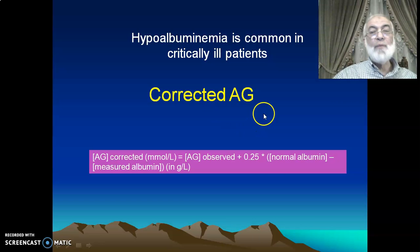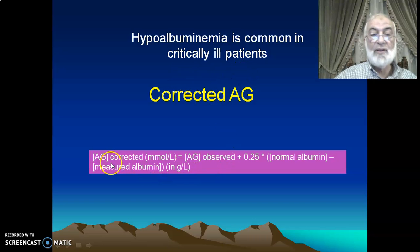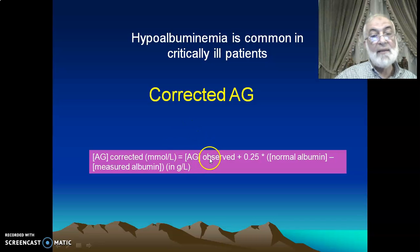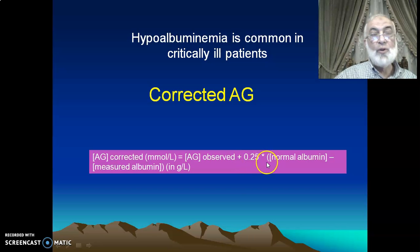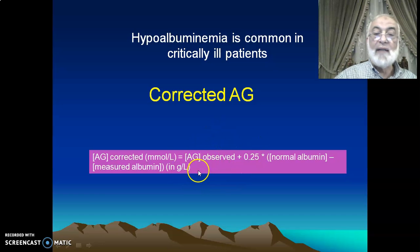Another important concept is corrected anion gap. Most patients in critical illness are usually suffering from hypoalbuminemia. The formula for corrected anion gap is: observed calculated anion gap plus 0.25 multiplied by (normal standard albumin minus the measured albumin in grams per liter). This gives you the corrected anion gap.